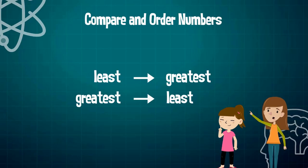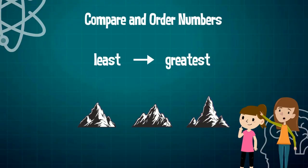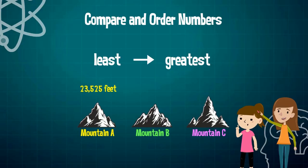Yes, of course. Let's start with the highest points. So let's say you were asked to order from least to greatest the heights of three different mountains. We can call these mountains Mountain A, Mountain B, and Mountain C. Mountain A has a height of 23,525 feet. Mountain B has a height of 23,468 feet, and Mountain C has a height of 25,487 feet.